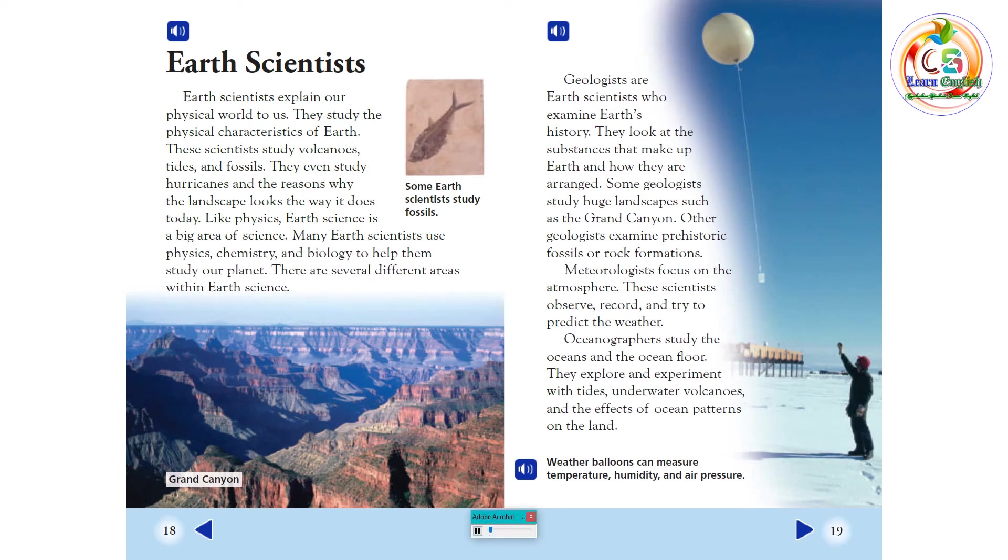Geologists are Earth scientists who examine Earth's history. They look at the substances that make up Earth and how they are arranged. Some geologists study huge landscapes such as the Grand Canyon. Other geologists examine prehistoric fossils or rock formations.